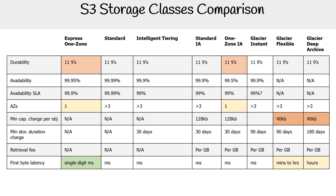We have all the S3 storage classes that could fit on screen. The only one not here is reduced redundancy storage. Intelligent tiering has its own access tiers, but they're utilizing existing tiers, so I'm not going to include them redundantly. This matrix isn't perfect, but it was the best way to fit everything into one screen.